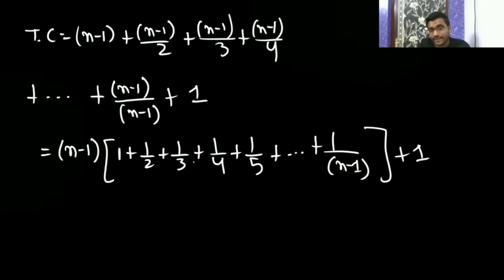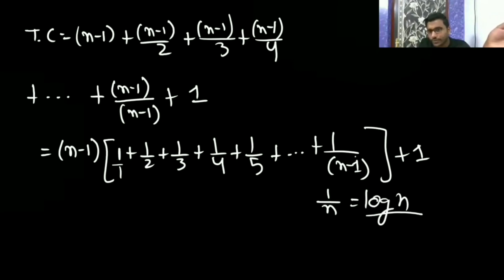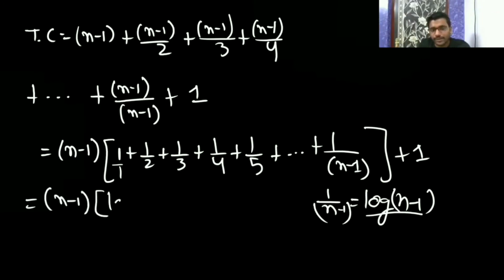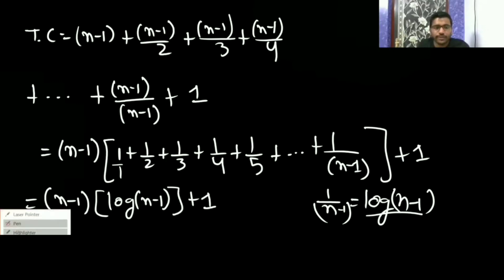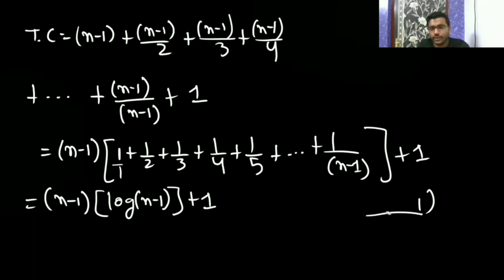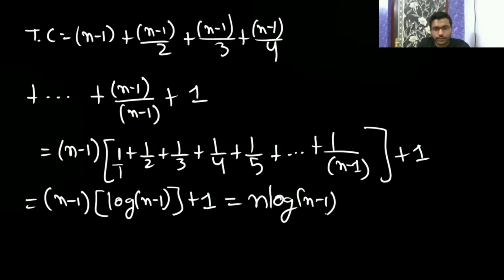This is a harmonic series. The sum 1 + 1/2 + 1/3 + 1/4 + ... + 1/n equals log n. Since here the harmonic series goes to n-1, it will be log(n-1). So the total time complexity becomes (n-1) times log(n-1), which gives approximately n·log(n) minus log(n-1).